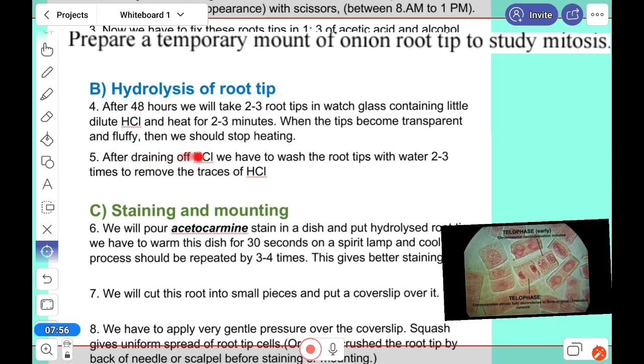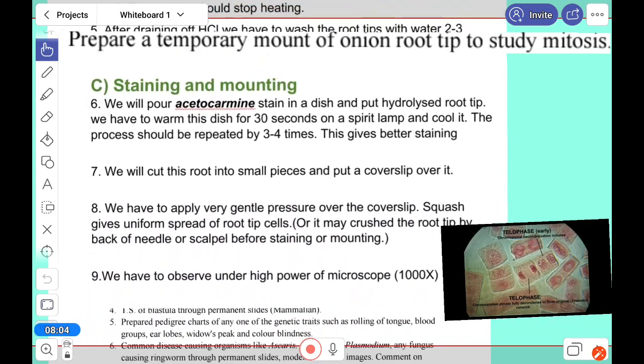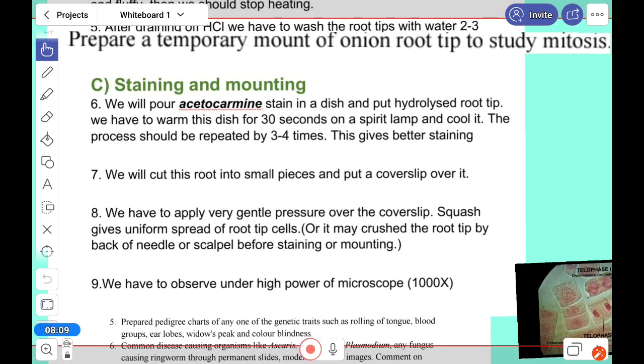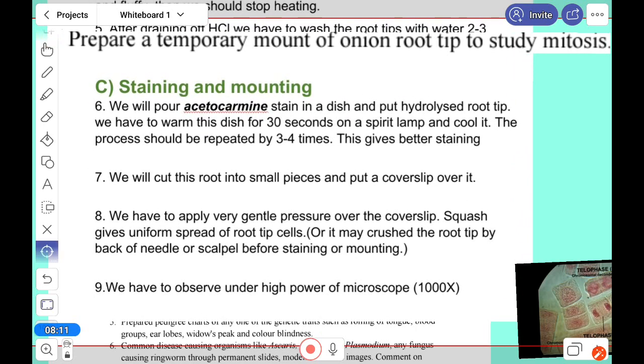After draining, we have to wash it and remove the hydrochloric acid. Now the staining and mounting part. Next, we'll pour the aceto-carmine stain in the dish and put the hydrolyzed root tip. Warm the dish for 30 seconds on the spirit lamp and cool it. We'll repeat this process three to four times for better staining.